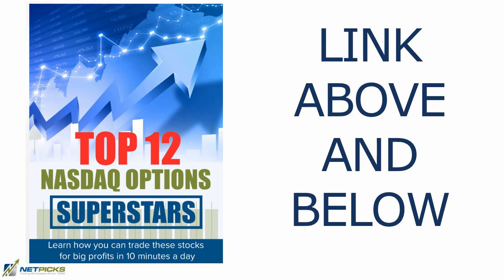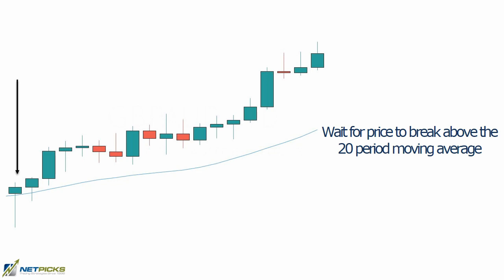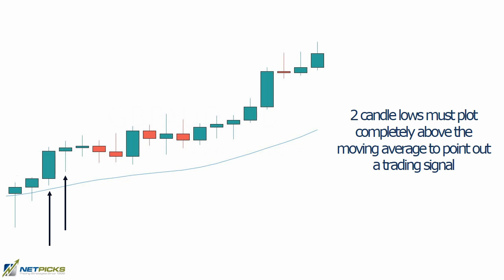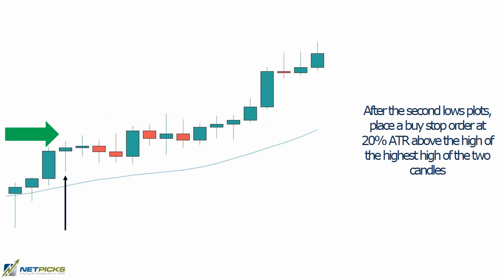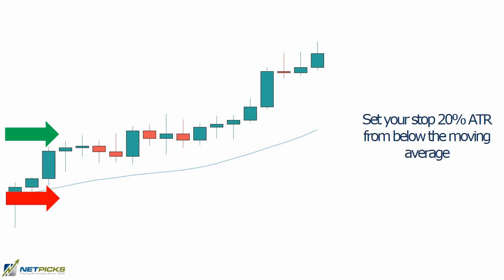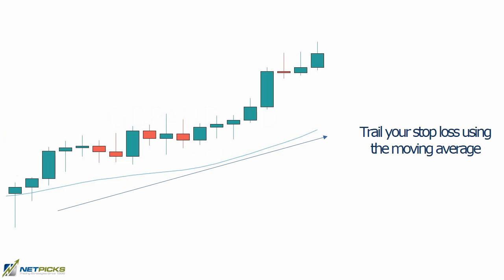In case you never saw that video about the strategy, the trading rules are as follows: wait for price to break above the 20-period simple moving average; you want two candle lows plotting completely above the average to signal a trade. After that second low plots, place a buy stop 20 ATR above the high of the highest high of those two candles. Set your stop 20 ATR below the moving average, and trail your stop loss using the moving average.